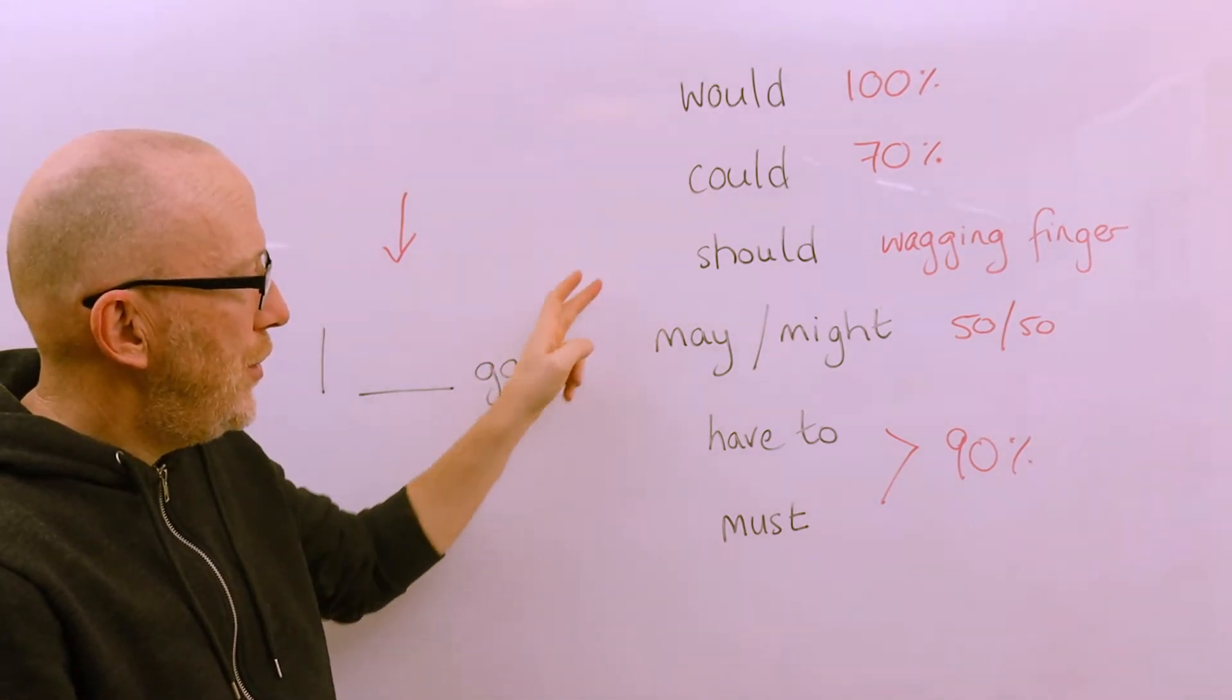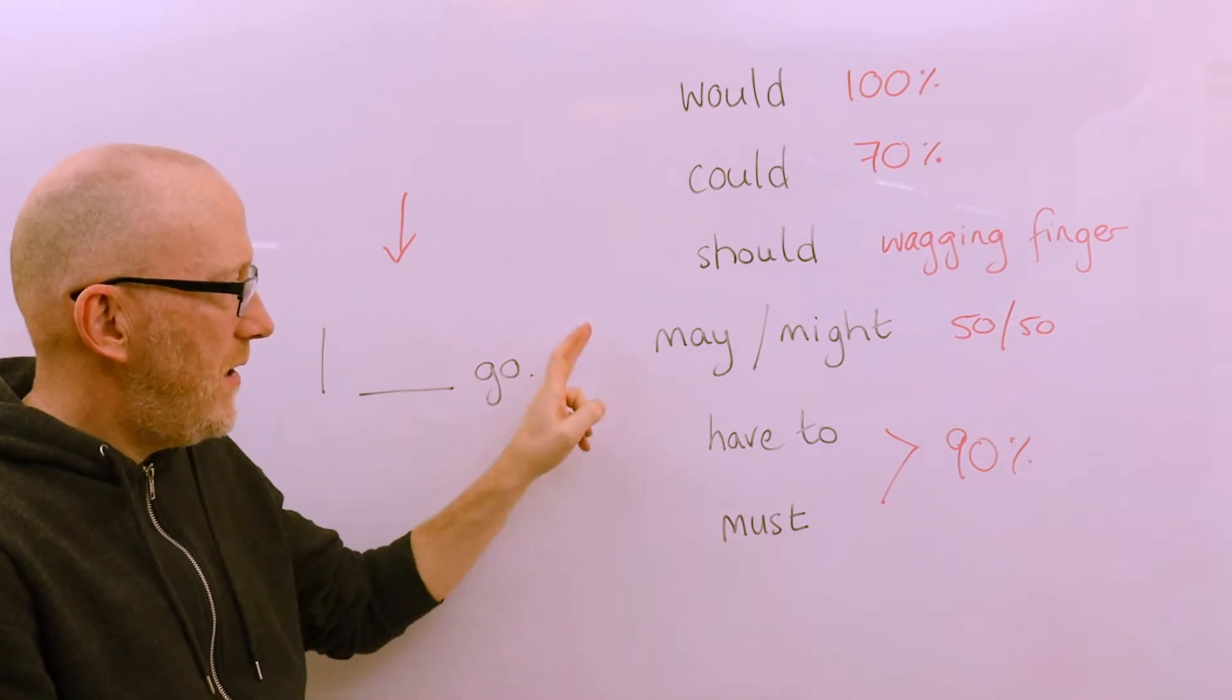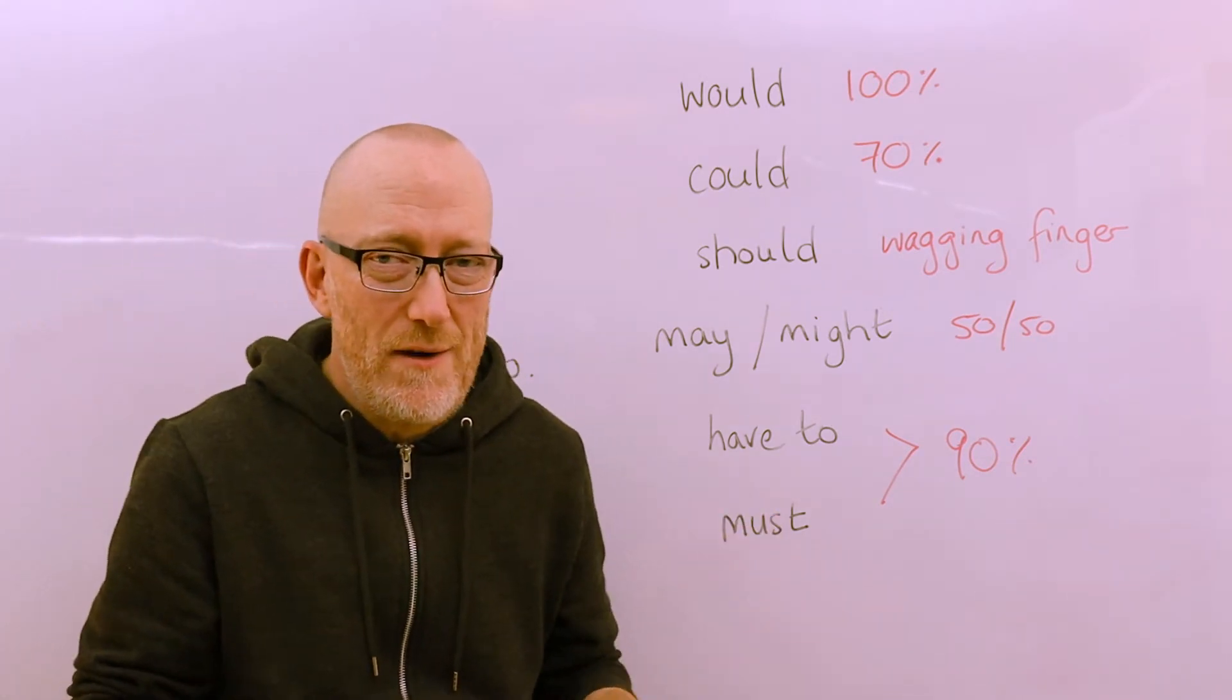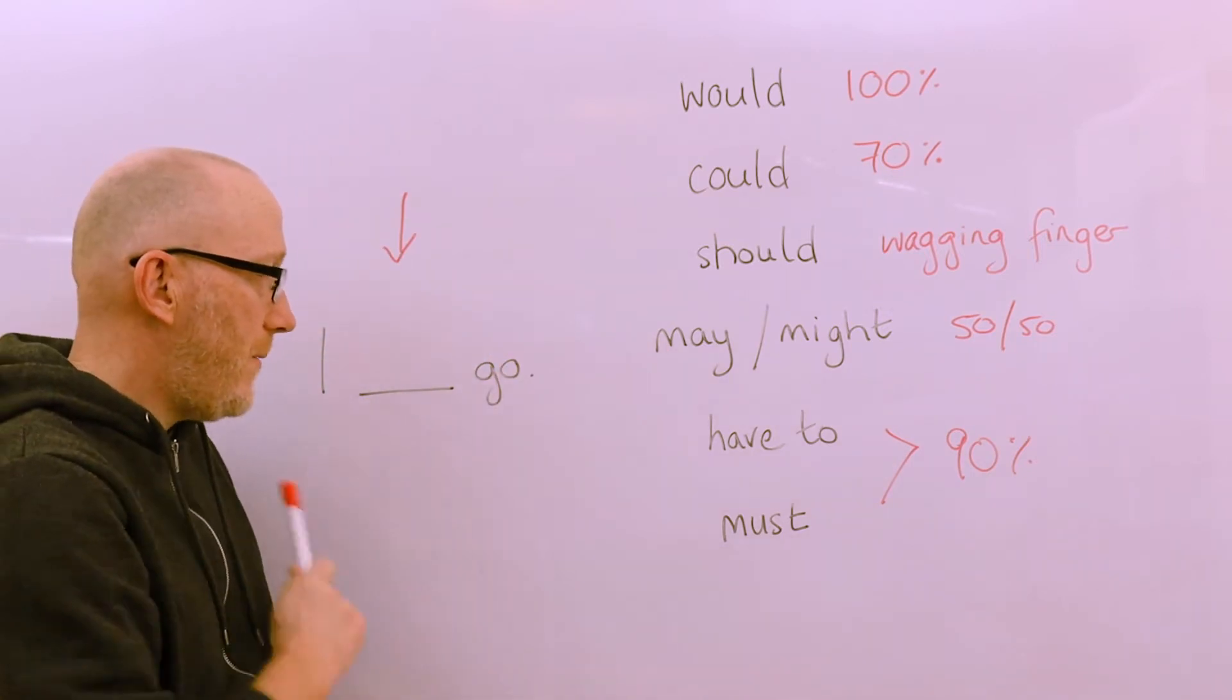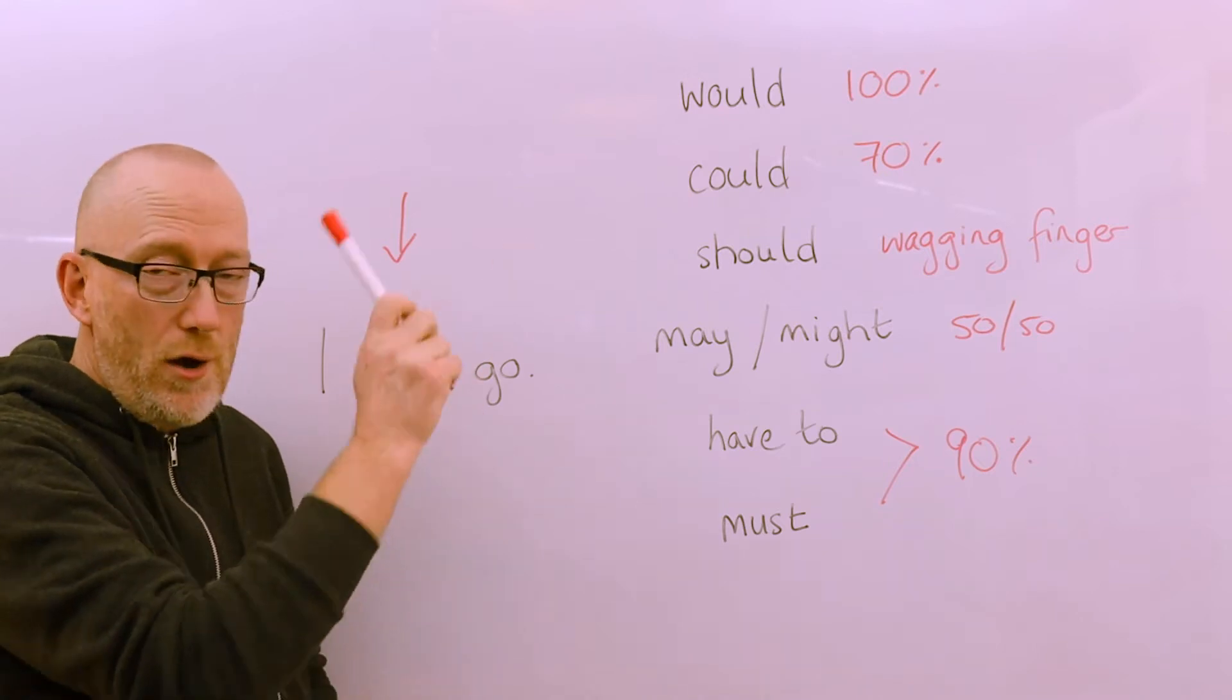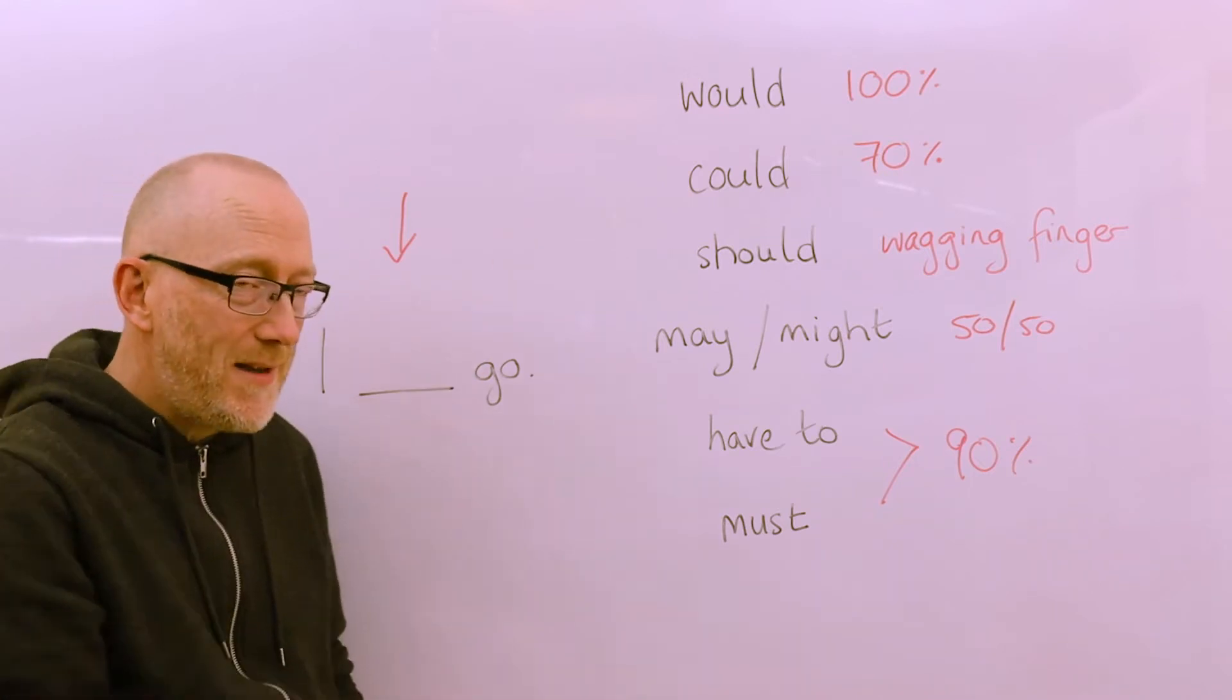could, should, may and might, have to and must. May and might are almost the same so I'm counting them as one modal. I'm going to use these modals in a very simple sentence: I blank go. Obviously the blank space is where the modal goes.